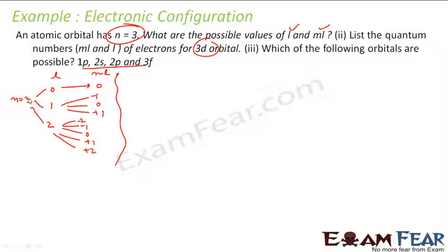N can be 3; L can be 0, 1, 2; and ML can be 0, minus 1, plus 1, minus 2, plus 2 — all these possible combinations are there.